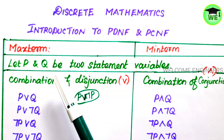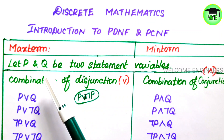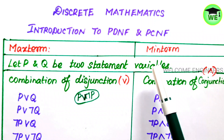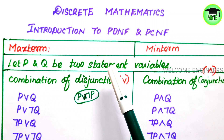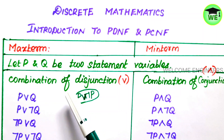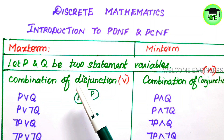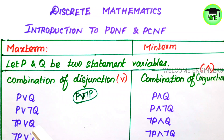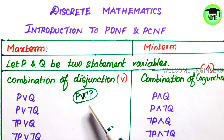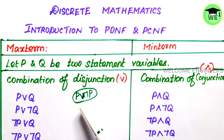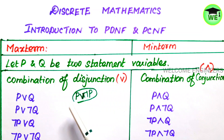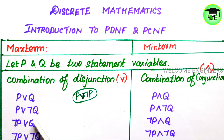First we are going to discuss what is meant by max term. Let P and Q be two statement variables. We construct all possible combinations of these two terms, which consist of the disjunction of P or its negation, and Q or its negation, such that none of the formulas should contain both the variable and its negation, like P or negation P. When we have this kind of term, we call it an elementary sum. None of the formulas should contain both P terms or both Q terms in our max term.